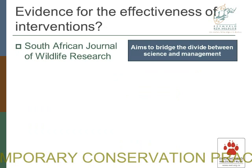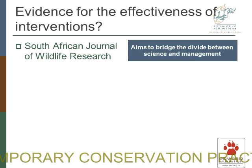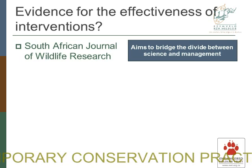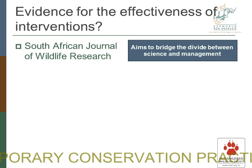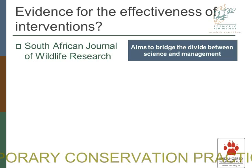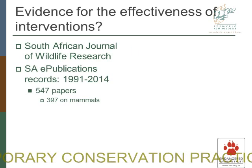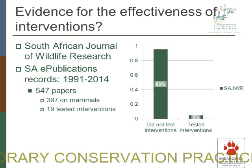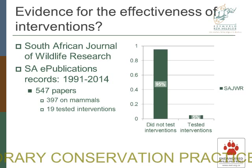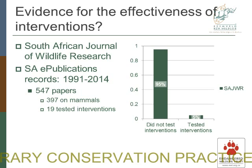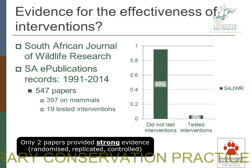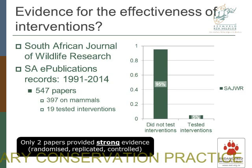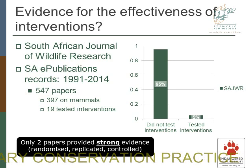We then wanted to see whether there is any evidence for the effectiveness of these interventions. The red list has provided a nice framework for understanding threats and interventions. As a start, we took the South African Journal of Wildlife Research — a local journal that's hopefully more accessible than some international ones, and which aims to bridge the divide between science and management. We trawled all e-publication records between 1991 and 2014 and found 547 papers, 397 of which were on mammals. Of those 397, only 19 actually tested interventions and provided any kind of information about the effectiveness of interventions. And really importantly, only two of those actually provided strong evidence — they were randomized, replicated, or controlled. A lot of the studies are just descriptive before-and-after studies. So two out of 397 isn't good.